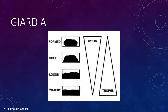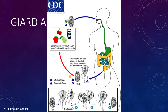Cysts are observed in formed stool and trophozoites are observed in diarrheal stool. When the cyst is ingested by a host, it reaches the intestine. In the intestine, excystation occurs and trophozoite formation occurs. The trophozoites multiply and form more trophozoites and cysts, both of which are excreted in the feces. This again contaminates the environment and reaches another host, completing the cycle.